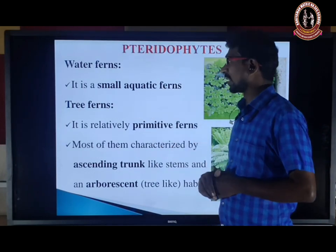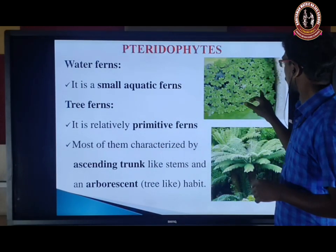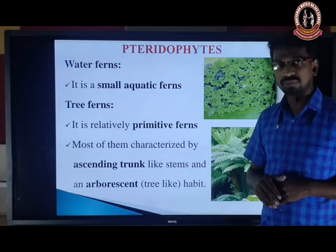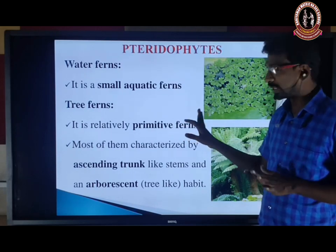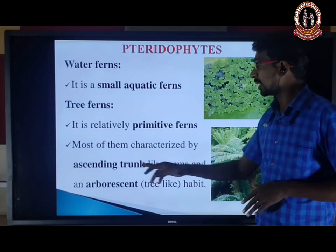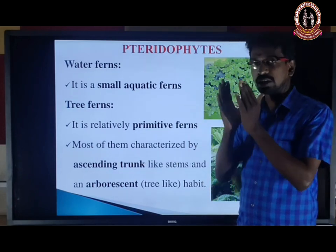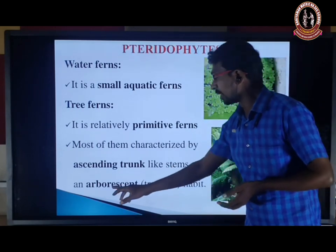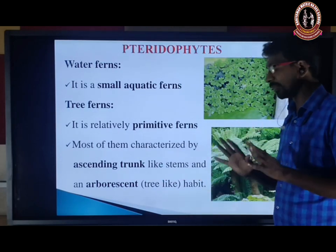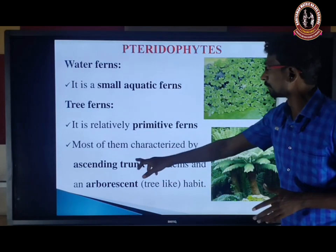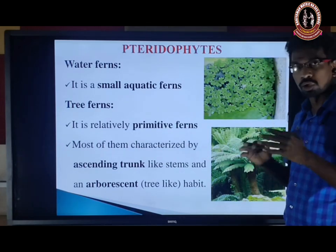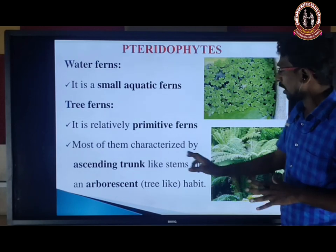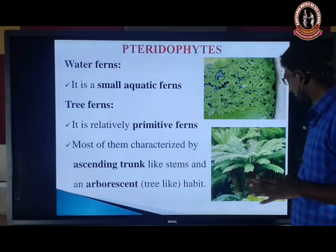Water ferns are small aquatic forms — Azolla is a common example. Tree ferns are a relatively primitive form, mostly characterized by an erect trunk — a woody part that grows above the soil level — and an arborescent, that is tree-like, habitat. So tree ferns look like trees because they have an erect stem and tree-like habit.